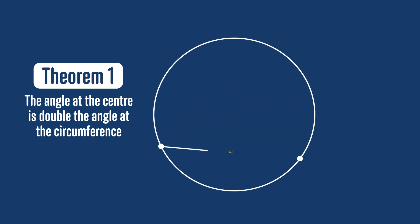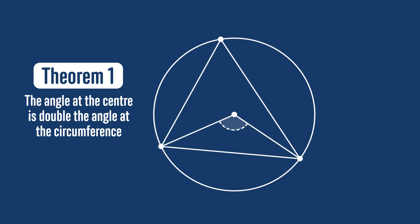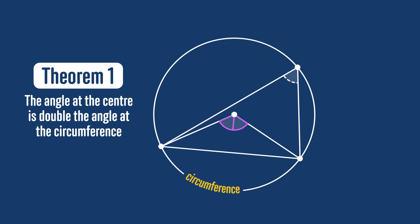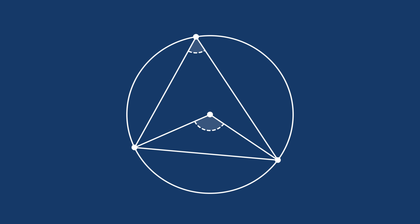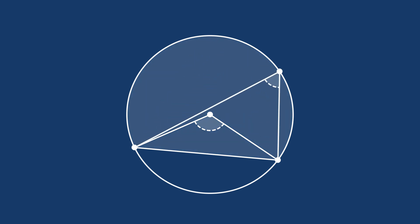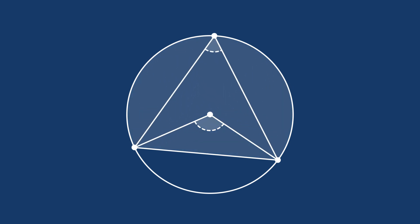More precisely, if we draw a chord in the circle and form an angle by joining the ends of the chord to the centre of the circle, then that angle will be exactly double the size of any angle we can make by joining the ends of the chord to any point on the circumference. The point at the circumference just needs to be in the same segment as the centre. This is really the most critical circle theorem, because once we've proven it, we'll see that we can get a lot more circle theorems from it very easily.